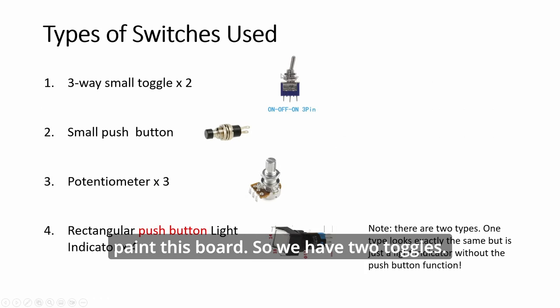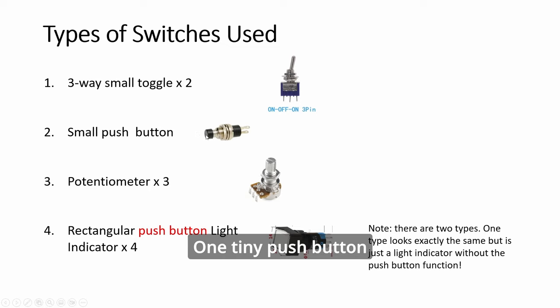So we have two toggles, one tiny push button as the beat button, and then three parts. And four slightly rectangular light indicators with the push buttons. Okay? As noted here.